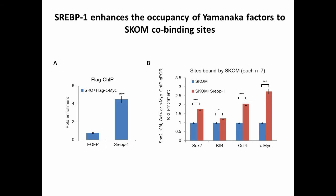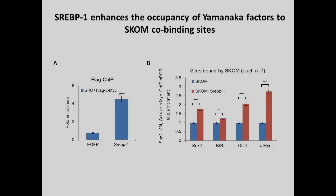It has been reported that cMyc can enhance Yamanaka factors' binding. So we first showed that in the presence of SREBP1, cMyc is more readily bound to the Oct4 promoter, and also SREBP1 can enhance the binding of OSKM to their co-binding sites.